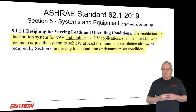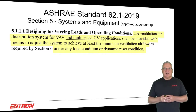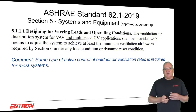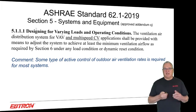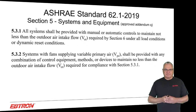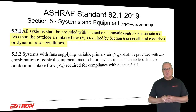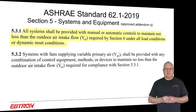Multi-speed constant volume systems are now the norm, whether they be constant volume air handlers, multi-speed fan coils, or whatever it is. So you have to do some type of active control of outdoor air ventilation rates on most of these systems — you just can't set it and forget it. All systems shall be provided with manual or automatic controls to maintain not less than the outdoor air intake flow required by section 6 under all load conditions or dynamic reset conditions — so on VAV as load varies, and on DCV systems as dynamic reset conditions vary.